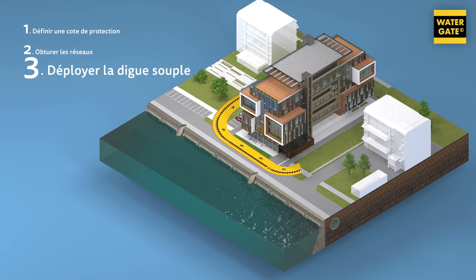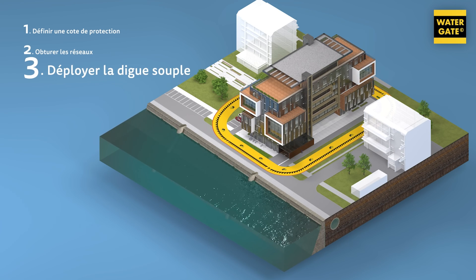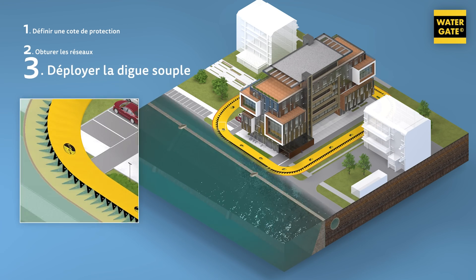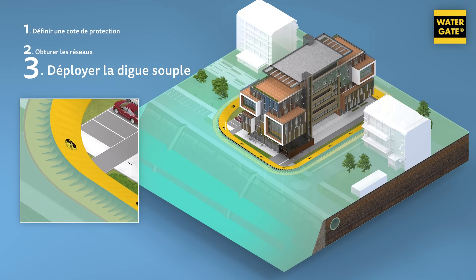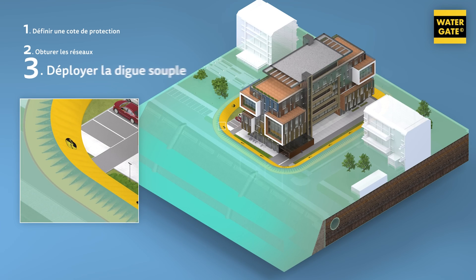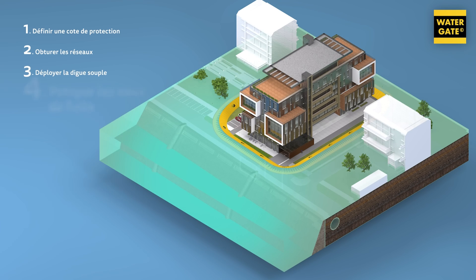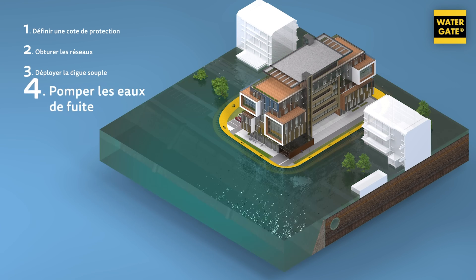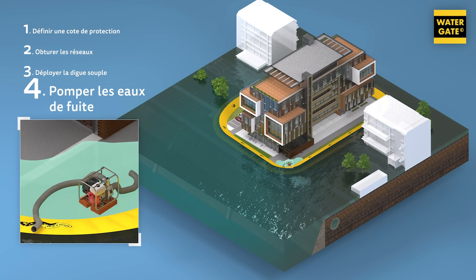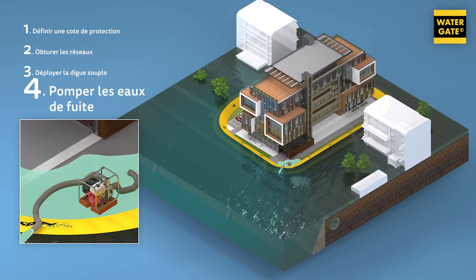La troisième étape consiste à empêcher l'eau d'atteindre les bâtiments. Enfin, il faut pomper les eaux de fuite et les rejeter côté inondation.